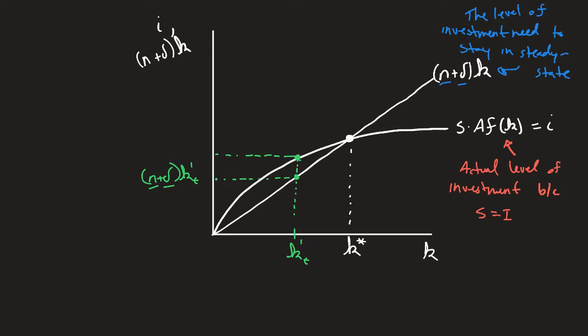That's the amount that's needed to replace the new individual or give the new individuals capital and replace the depreciated amount of capital. Whereas this point up here, this is that level of i prime. That's the amount of actual investment.